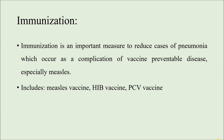For specific protection against respiratory infections, we have immunization, which is an important measure to reduce cases of pneumonia occurring as a complication of vaccine-preventable diseases. Certain diseases can be prevented if we opt for vaccination or immunization. This includes the measles vaccine, Hib vaccine, and PCV vaccine, which we shall discuss in the next slide. Most of them are bacterial vaccines and help in prevention of bacterial ARI.